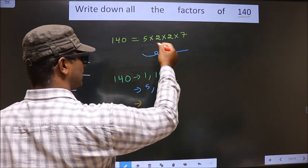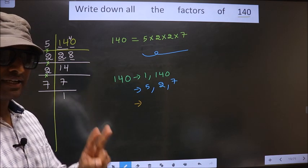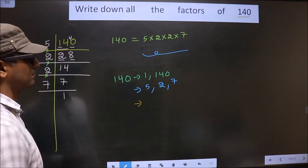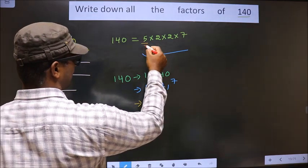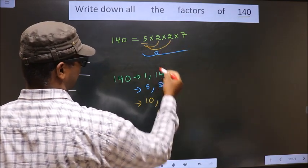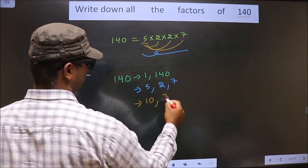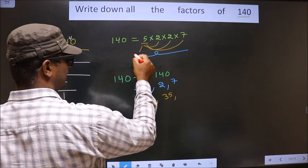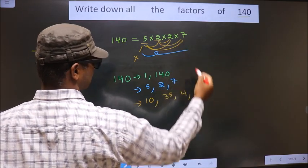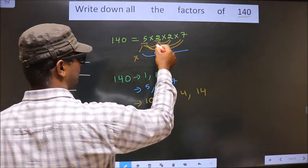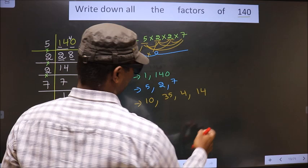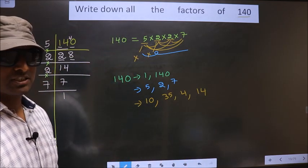Now, from these numbers, you select 2 numbers at a time. How do we select? If I combine 5 with the 7, I get 35. Now, you leave 5, take this 2, combine with this 2, we get 4. Now, if I combine with the 7, we get 14. Now, you leave this 2, take this 2, combine with the 7, we get 14. So no more combinations possible.